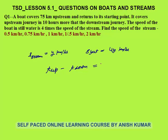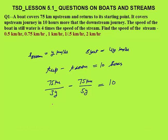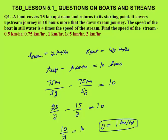Time upstream minus time downstream equals 10 hours. Time upstream is distance over speed: 75 km at upstream speed (4y − y = 3y). Time downstream is 75 km at speed (4y + y = 5y). So 75/3y − 75/5y = 10, giving 25/y − 15/y = 10, so 10/y = 10, meaning y = 1 km per hour. The easiest way — it won't take more than 30–40 seconds to solve this.